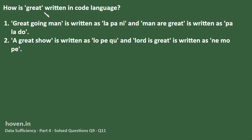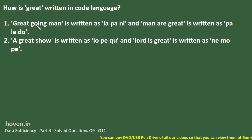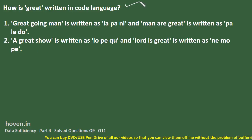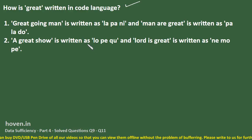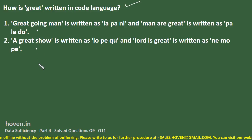How is 'great' written in code language? 'Great going man' is written as 'la pa ni' and 'man are great' is written as 'pa la do'. These are two statements and we have to answer the question on the basis of these two statements — whether statement one alone, statement two alone, or both together will answer it.